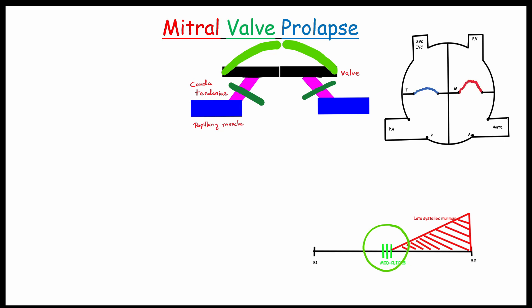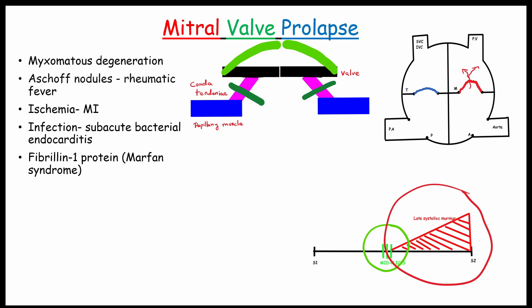If it is progressed, it leads to leaking of the blood. So we hear late systolic murmur. The reason of mitral valve prolapse can be myxomatous degeneration, Aschoff nodules in rheumatic fever, ischemia in myocardial infarction, infections and in Marfan syndrome.